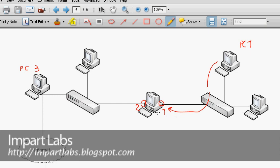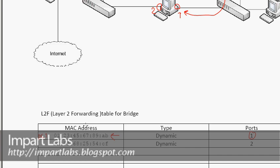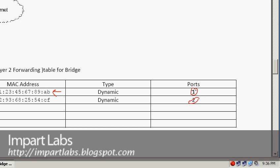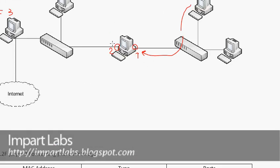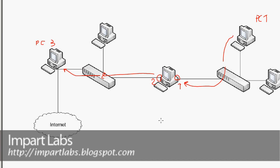The bridge looks at the destination MAC address of the packet. It goes through its table to find the destination MAC address — in this case, for PC3. It finds the entry, sees that PC3 is accessible through port 2, and simply sends the packet through port 2 to the switch, which forwards it on to PC3.